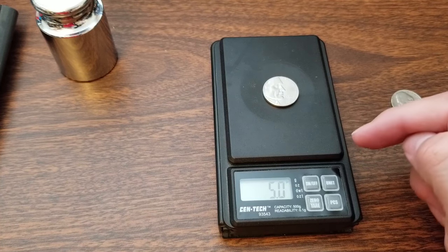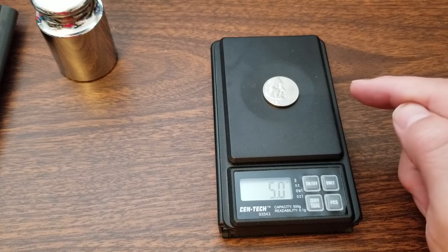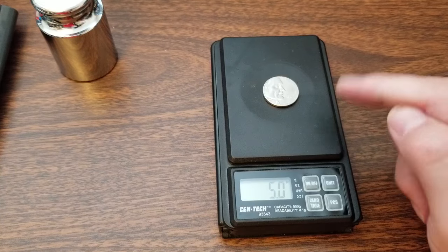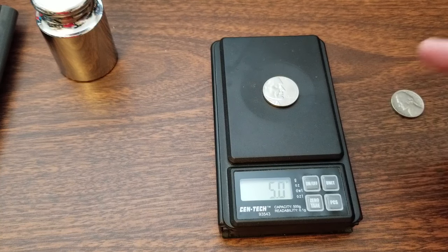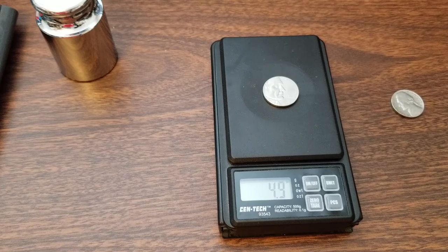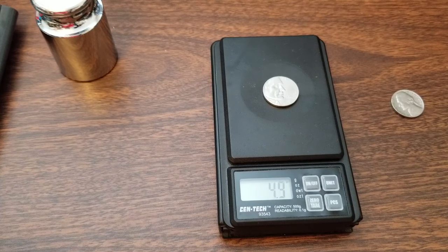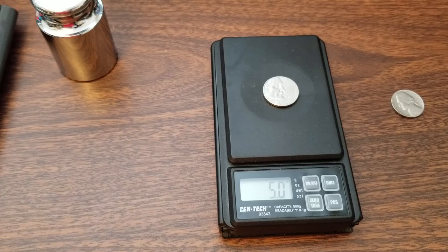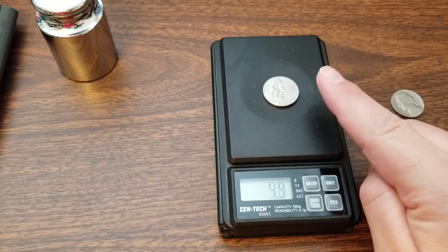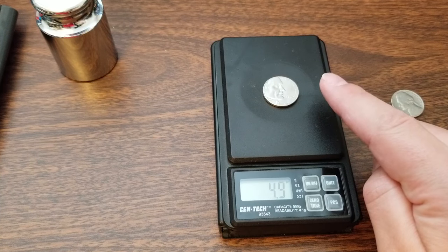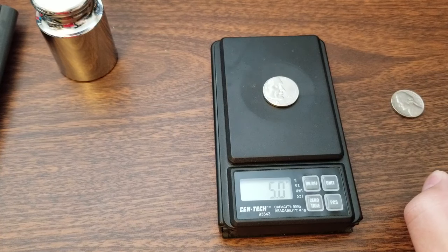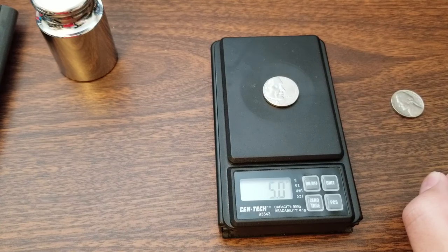Now, this particular scale needs 200 grams as the minimum weight to be able to calibrate it. So, if you have 200 grams and you need nickels, you're going to need 40 nickels. They need to be clean. They cannot have any packaging on them. And you'll have to stack them around to get your mass weight that you need to recalibrate.